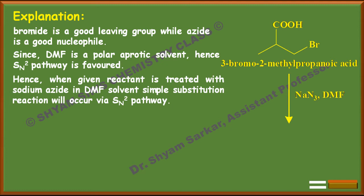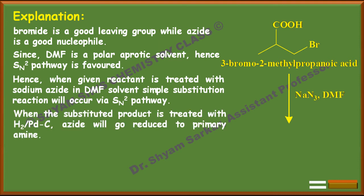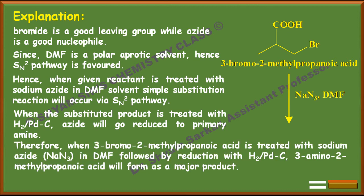A simple substitution via SN2 pathway will occur. When the substituted product is then treated with hydrogen over palladium on charcoal (H2/Pd-C), the azide group reduces to a primary amine — one NH2 group forms in place of N3. Therefore, 3-amino-2-methylpropanoic acid will form as the major product.